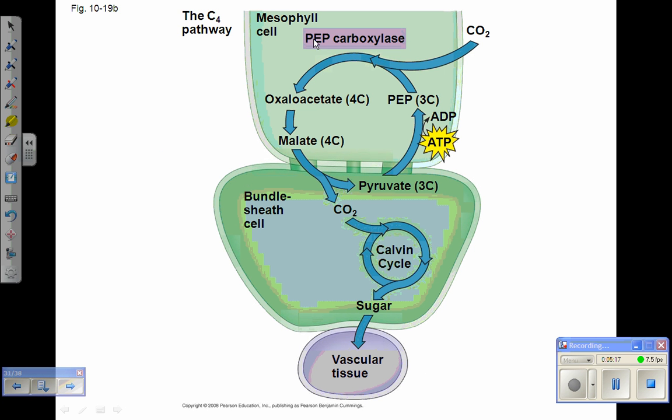A special enzyme called PEP carboxylase, PEP stands for phosphoenolpyruvate, is only present in the mesophyll cells and it catalyzes the addition of CO2 to a three carbon compound called phosphoenolpyruvate. PEP carboxylase has a much higher affinity for CO2 than rubisco does and it has absolutely no affinity at all for binding oxygen. So it's the perfect enzyme to put to work in these outer mesophyll cells. It can work in conditions of low CO2 in which rubisco would be inefficient.